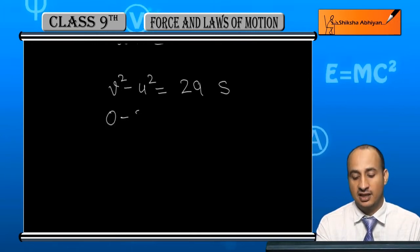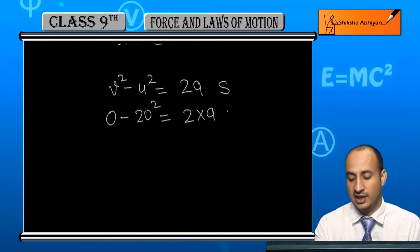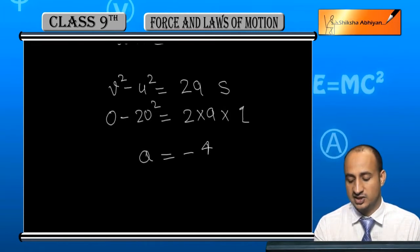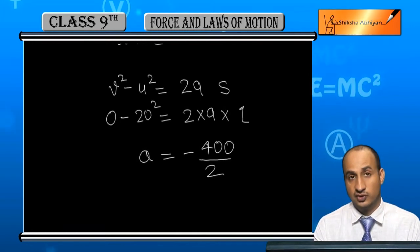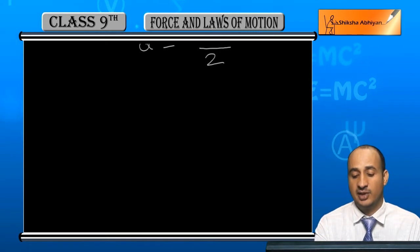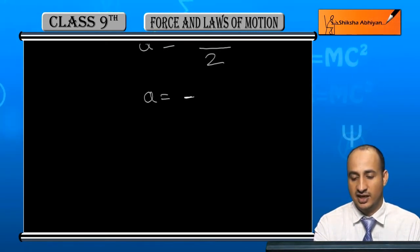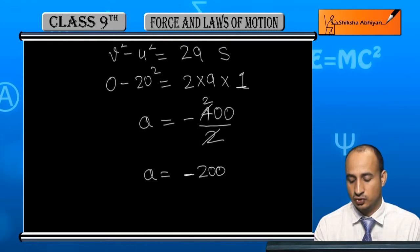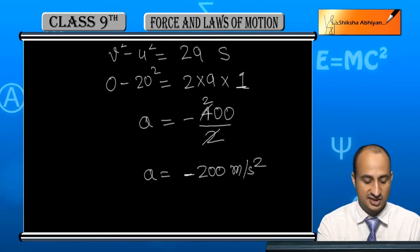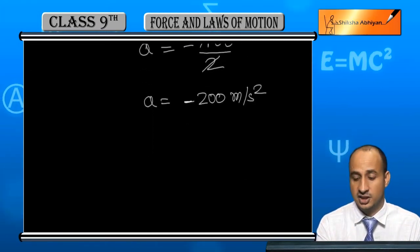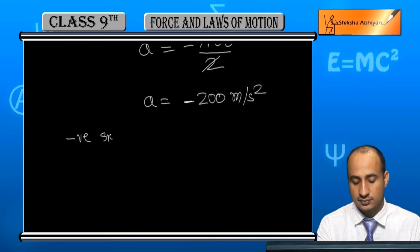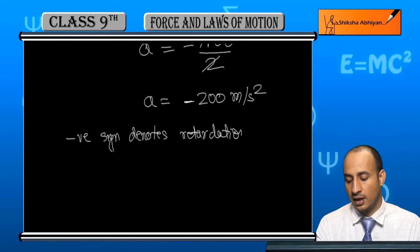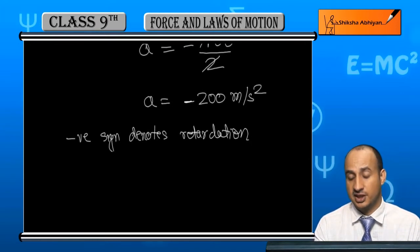V squared is 0, U squared is 20 squared which is 400, and S is equal to 1 meter. So: 0 minus 400 equals 2 times A times 1, giving A equals minus 200 meters per second squared. The negative sign denotes retardation.